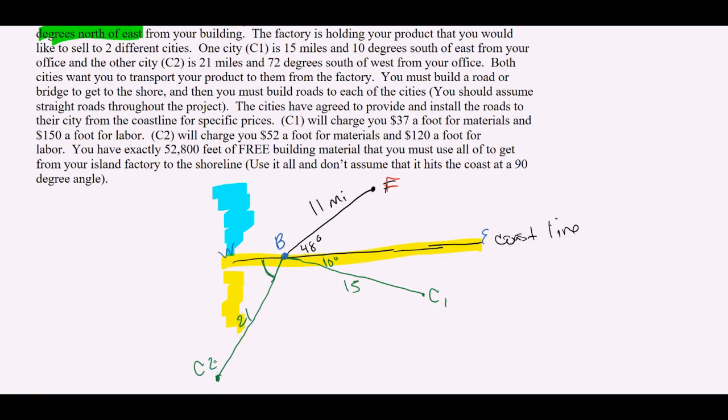But it's 72 degrees south of west from your building. Well, here's the west. So it's going to be 72. That's pretty steep. So let's call that 72. And then it needs to be a little bit longer than the 15, right? Because it says 21. So maybe we'll call that 21. And that's going to be city two. So we kind of got an idea of what's going on here. Oh wait, what was that angle? 72. Beautiful. All right. Both cities want you to transport your product to them from the factory. So we've got to go through the ocean, hit the beach, and then get to the cities. You must build a road or bridge to get to the shore. And then you must build roads to each of the cities.